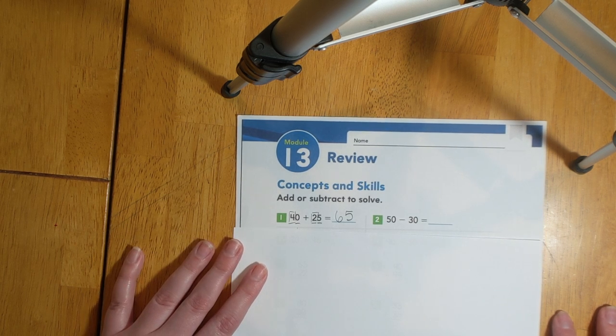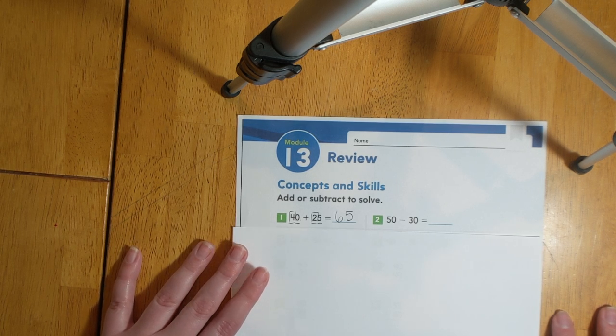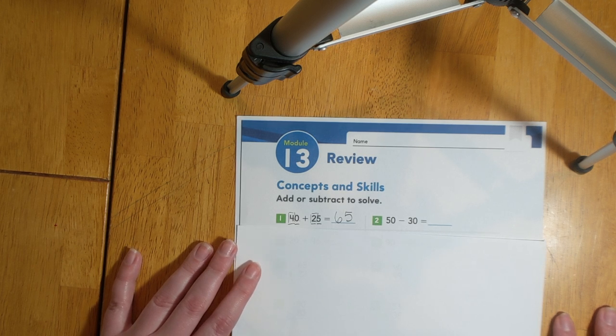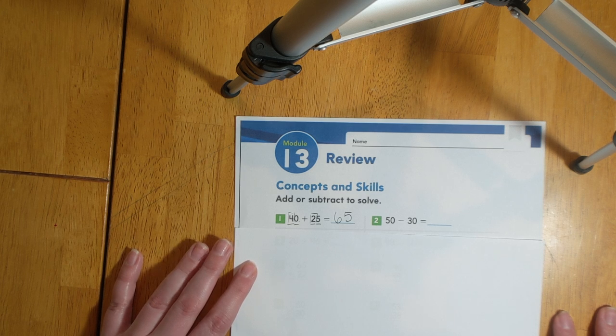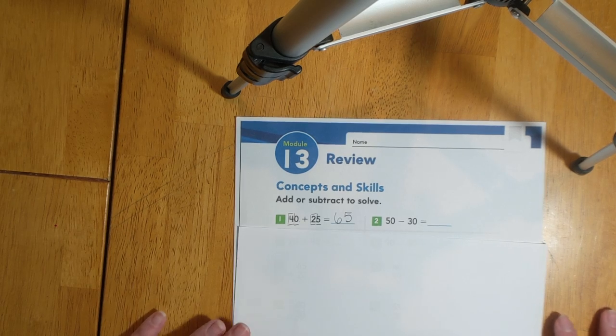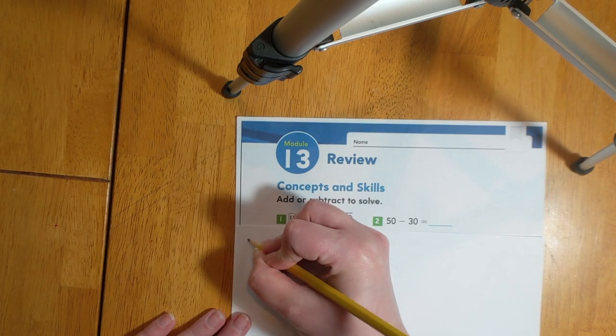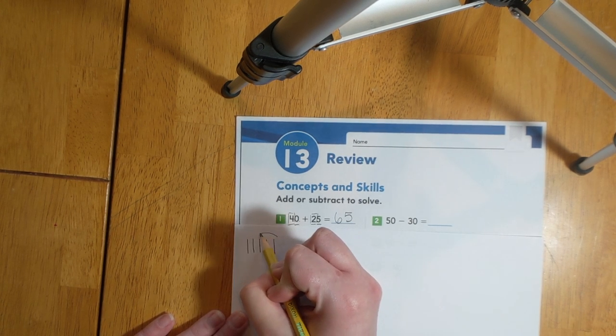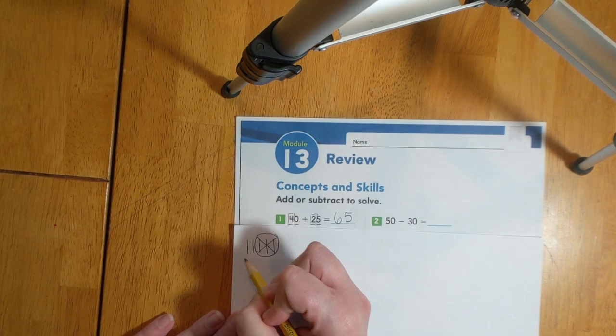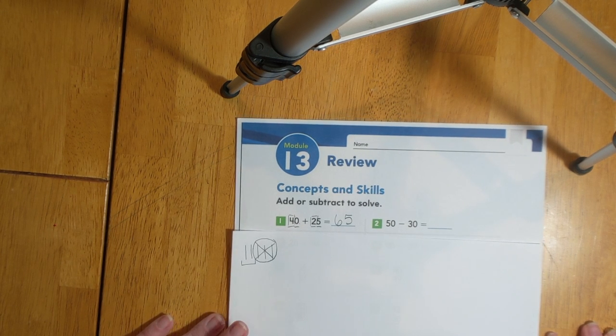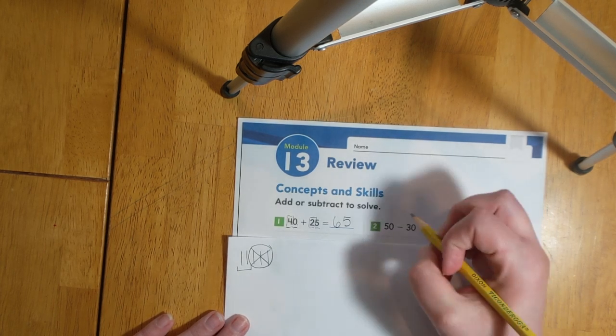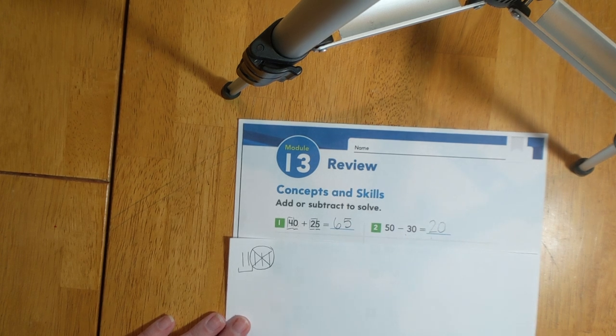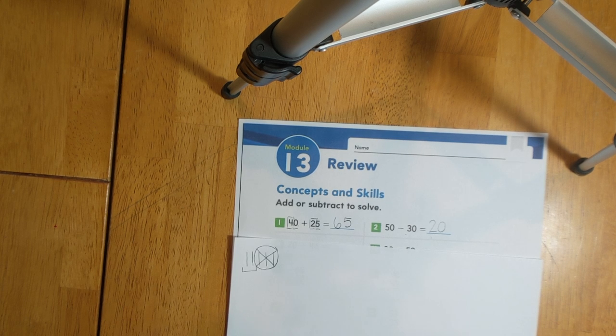Let's look at number two. We have 50 minus 30. We've learned that there's multiple different ways that we can solve addition and subtraction equations. For this one we can use our fact families to help us or draw a picture. Let's go ahead and draw a picture. I'm starting with 50. So I'll draw five groups of ten. I'm subtracting 30. So let's circle three groups of ten and cross them out. That leaves me with two groups of ten which is the same as 20. So 50 minus 30 equals 20. We know that five, three, and two are all part of a fact family.